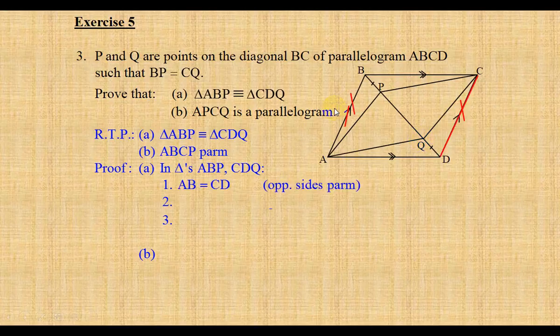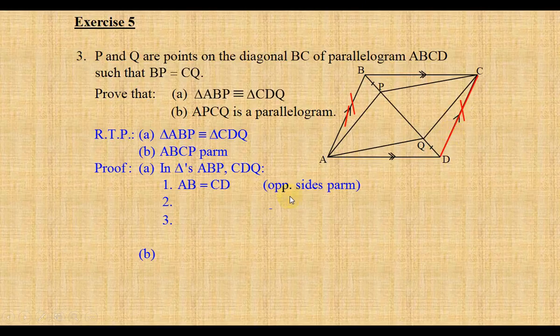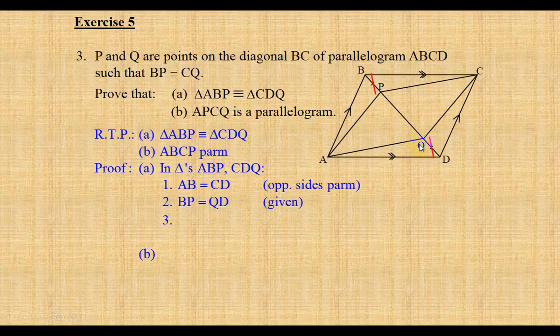Number one. AB is equal to CD because those are the opposite sides of a parallelogram, and the property states opposite sides of a parallelogram are equal. Number two. BP is equal to QD. That was given information.